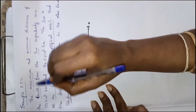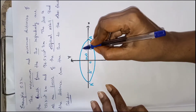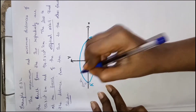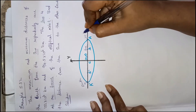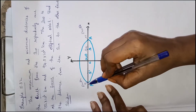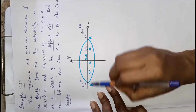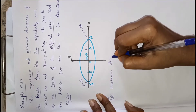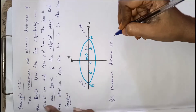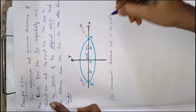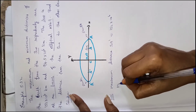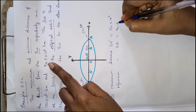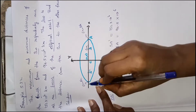The maximum distance is SA' and the minimum distance is SA. The maximum distance SA' is equal to 152 into 10 power 6 kilometer. The minimum distance SA is equal to 94.5 into 10 power 6 kilometer.